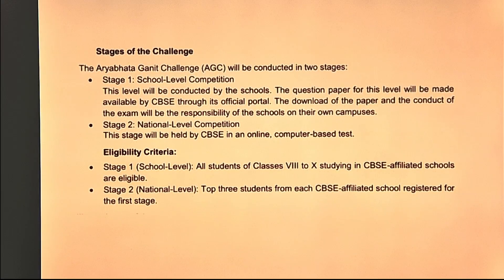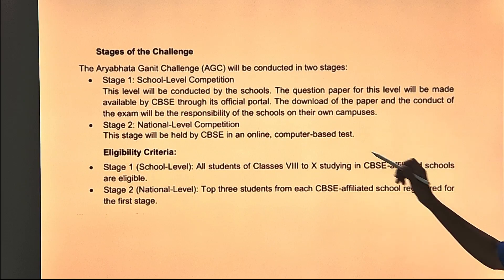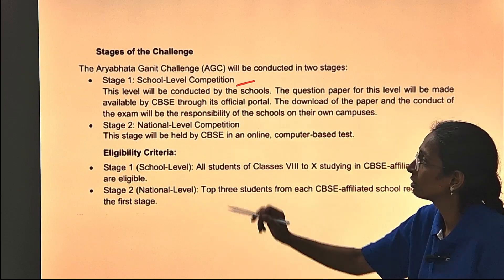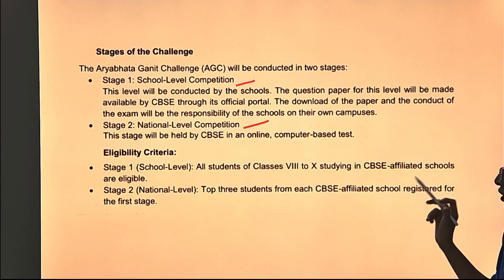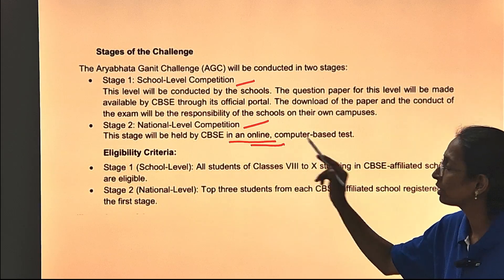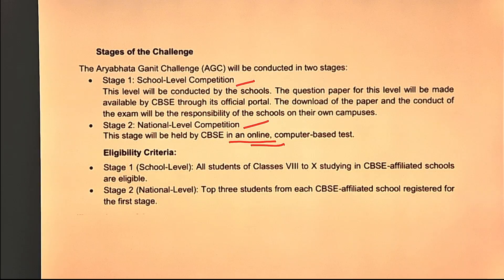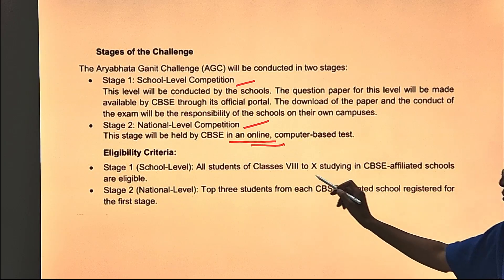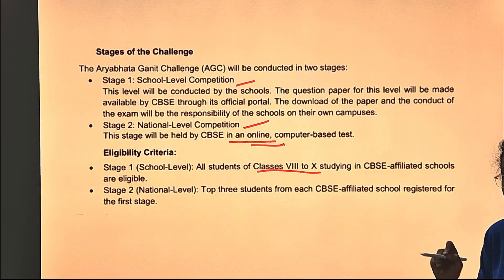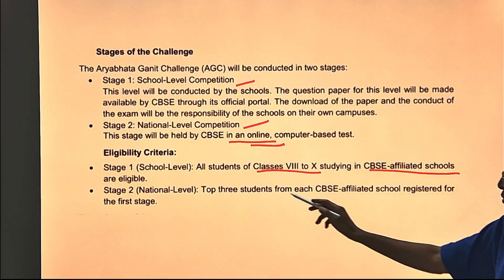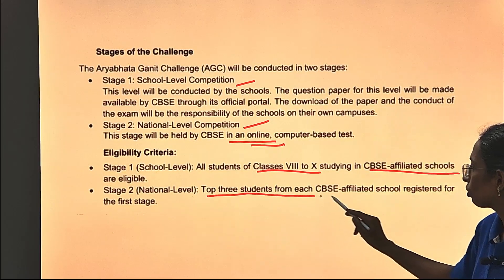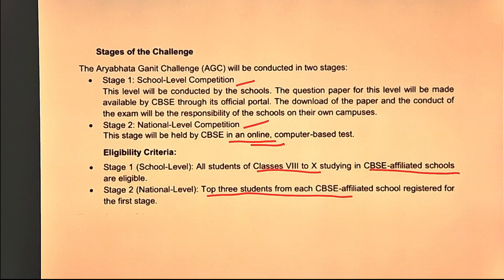Stage 1 is a school level competition whereas stage 2 is a national level competition. The national level competition will occur in the online format, that is a computer based test. Eligibility criteria for stage 1 is that the student must be in class 8 to 10 and studying in a CBSE affiliated school. For stage 2, the top 3 students from each school will qualify.